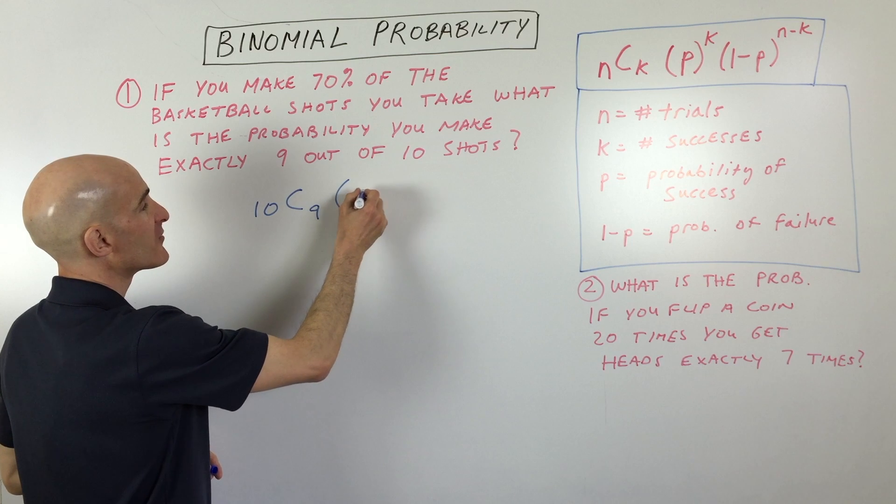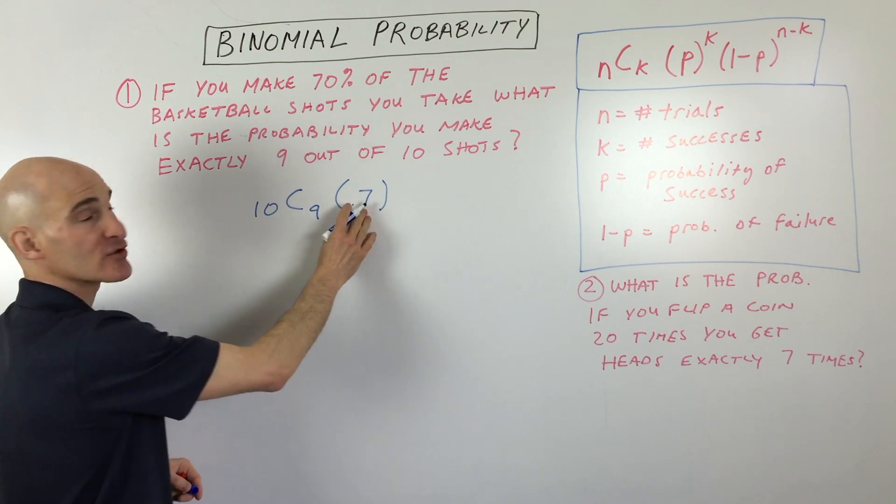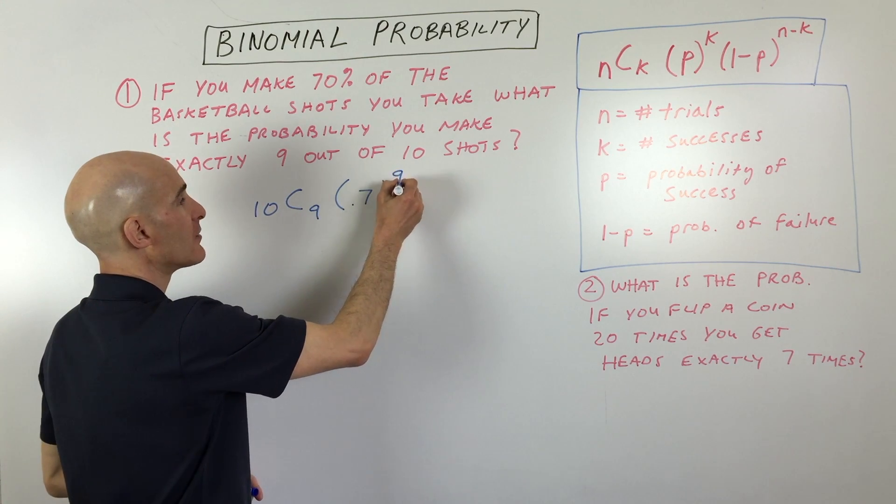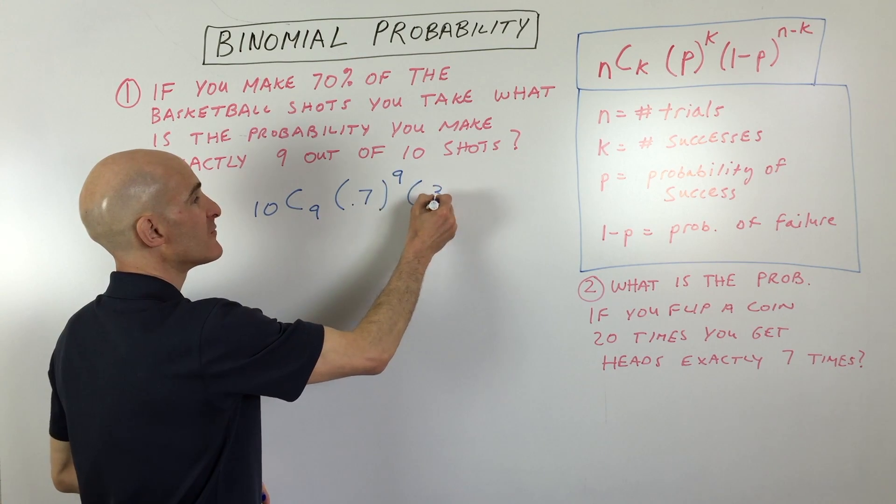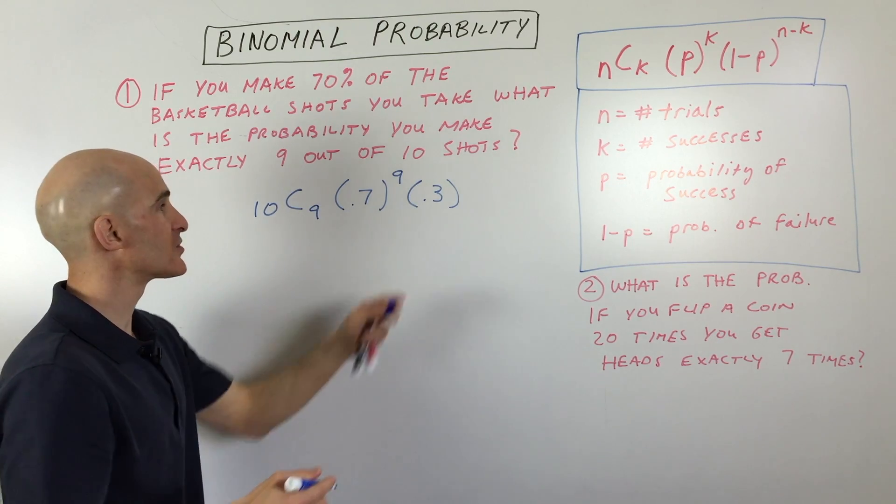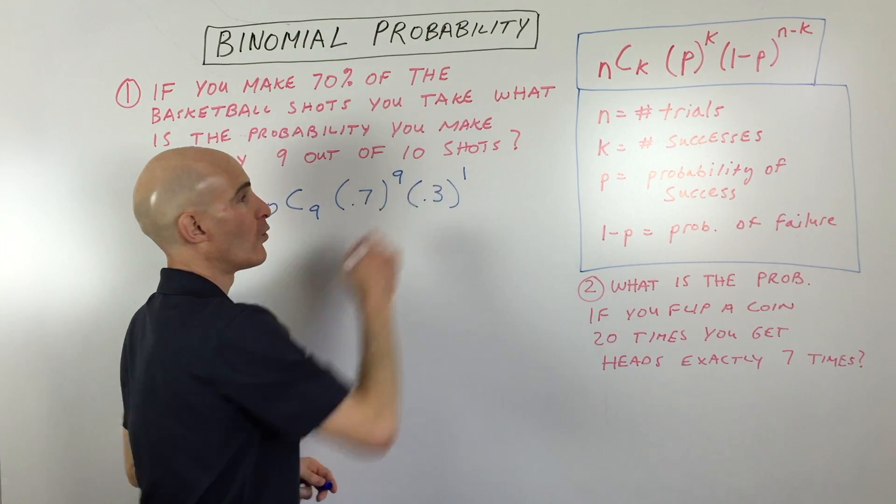We want to make nine, right? So this is 10 choose 9. We know the probability of making the basket is 70%, which is 0.7. And we want to make nine of those. And then the probability of missing the shot is 30%. So that's 0.3, and one of those.